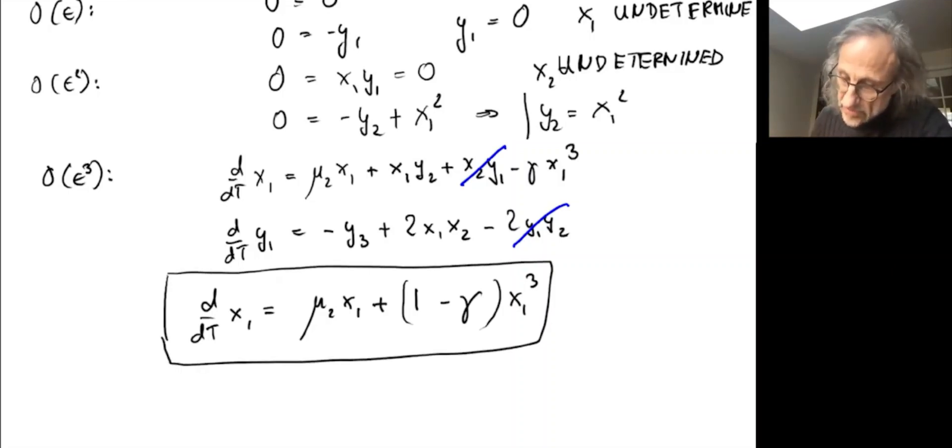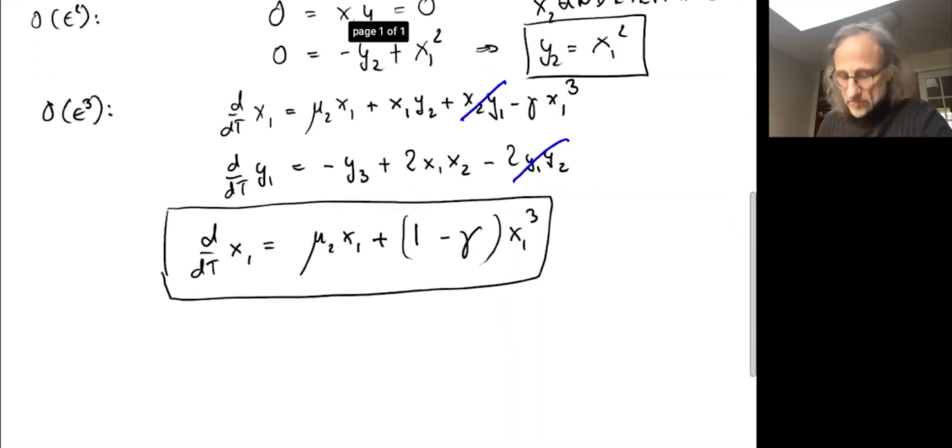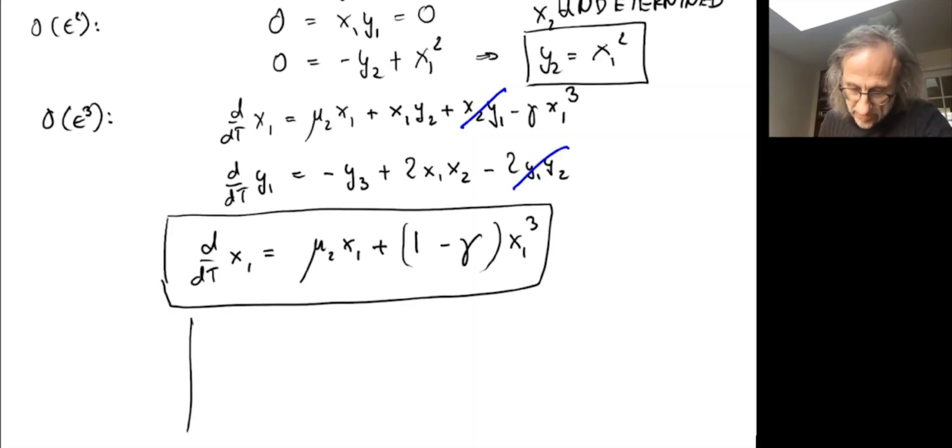This is the equation for the center manifold. We know in our x,y plane, the center eigenspace is the x axis, and the center manifold is tangential to that. We see that y as a function of x is given by y = x². As x evolves, the solution (x,y) evolves on that center manifold, and the dynamics are given by that equation.